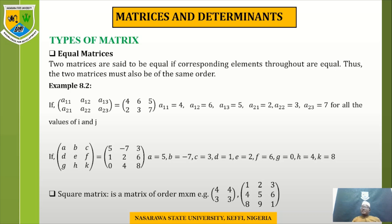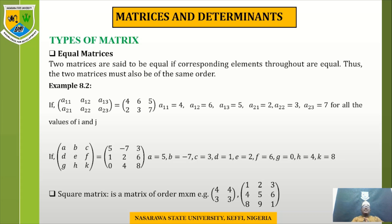For the second example of equal matrices, the first matrix has order 3 by 3 and the numerical matrix also has order 3 by 3. The reason we give this example is to show that each element has a corresponding element in the other matrix. The order of the matrix plays a vital role in establishing equality.